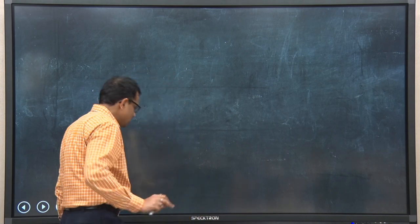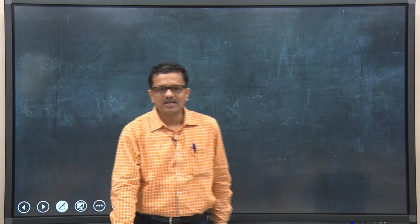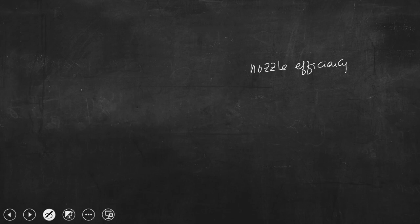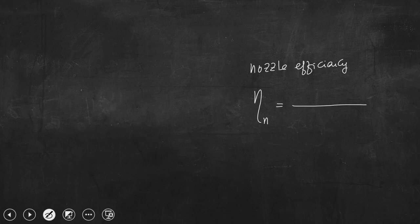It is better to write the nozzle efficiency that we derived in the last class - that is the mathematical expression. The nozzle efficiency can be expressed mathematically as the actual heat drop due to the isentropic process, which is H1 minus H2 prime divided by H1 minus H2.